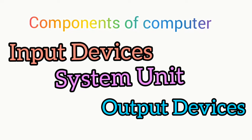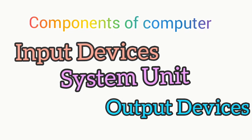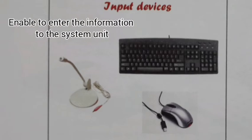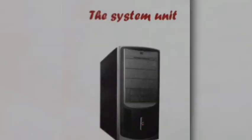Let me explain what input devices, system unit, and output devices are. The input devices are keyboard, microphone, and mouse. Do you know why we call these devices input devices? Because by using these devices, we are giving some instructions to the computer. Input devices enable the information to enter the system unit.